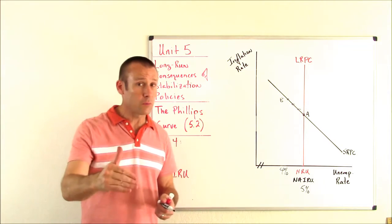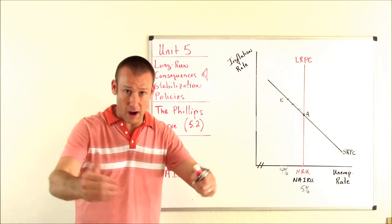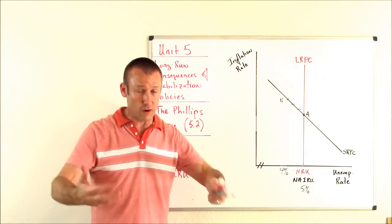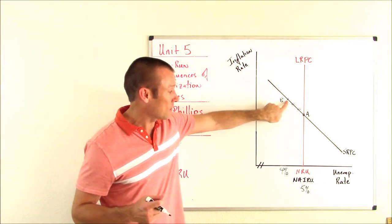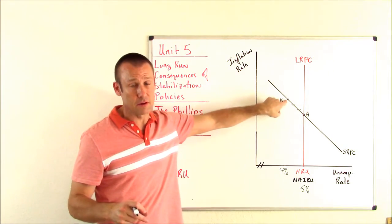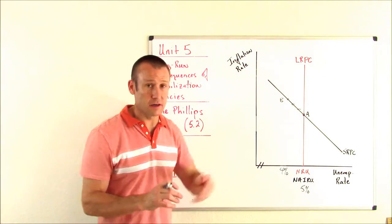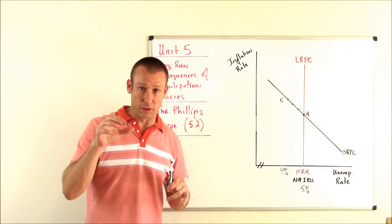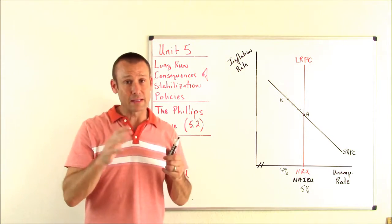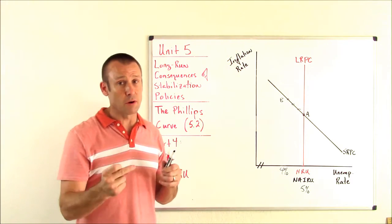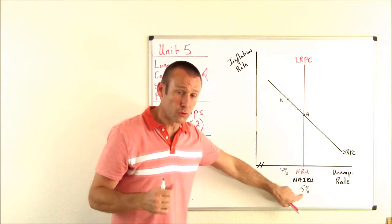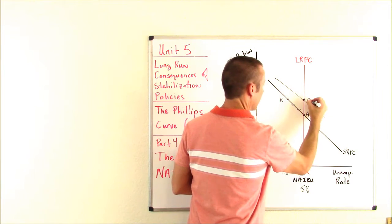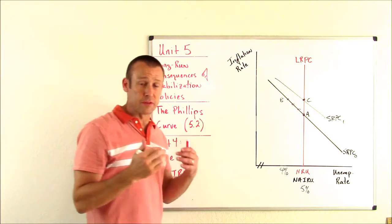To get unemployment down to 4%, businesses have to hire structurally and frictionally unemployed people, driven by increased demand and production. We can reach 4% in the short run, but not in the long run. When the Fed thinks they've fixed the economy, wages start going up — because we dipped into that frictional and structural labor pool. SRAS shifts left, the price level rises, and we return to full employment output, back to our true NRU/NAIRU. The SRPC shifts right (as SRAS shifts left), moving us to point C.